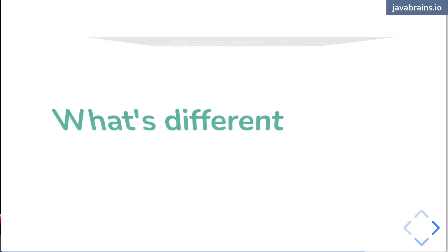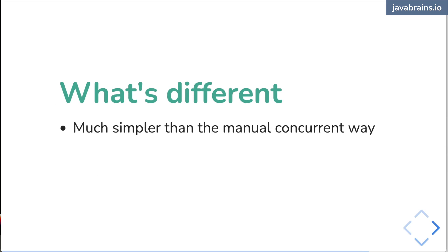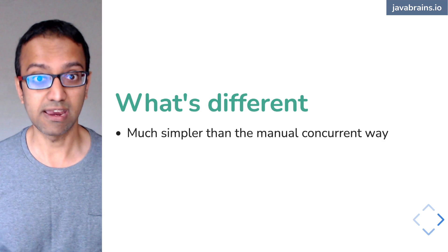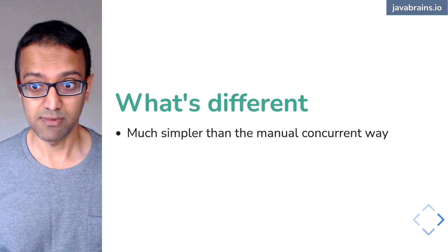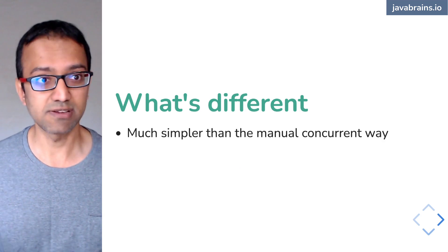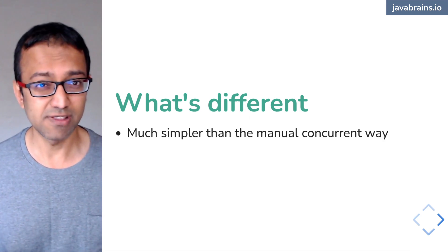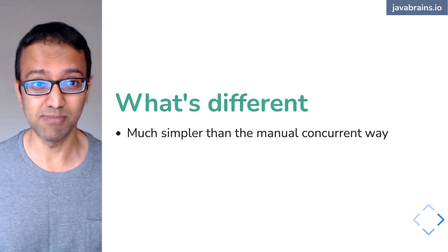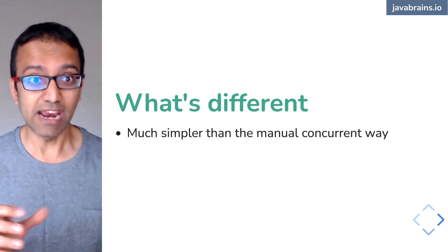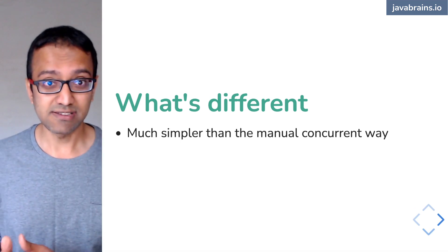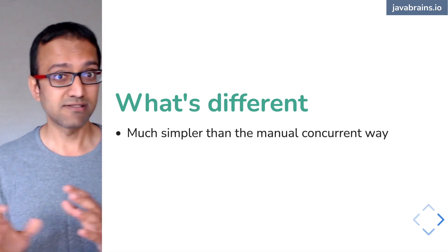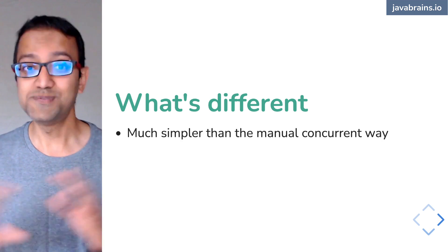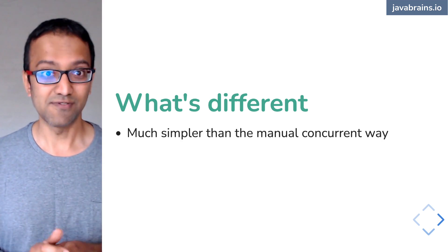What's different here? In my opinion, it is much simpler — much simpler than the manual concurrent way. You might disagree because this code is new to you, but once you get familiar with it, it'll definitely seem much simpler. You can understand this, and then it's objectively a simpler way.